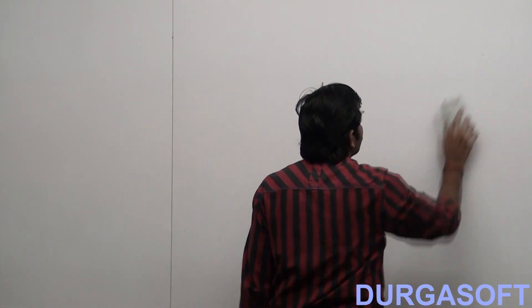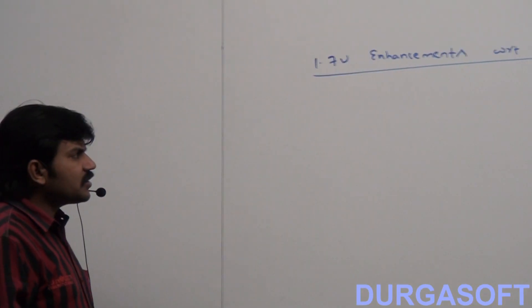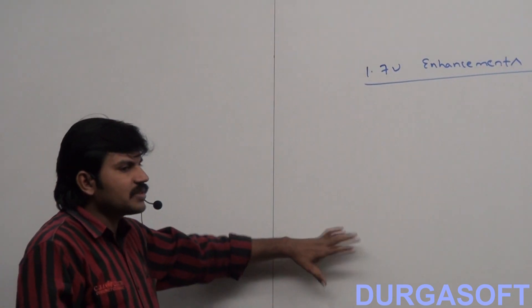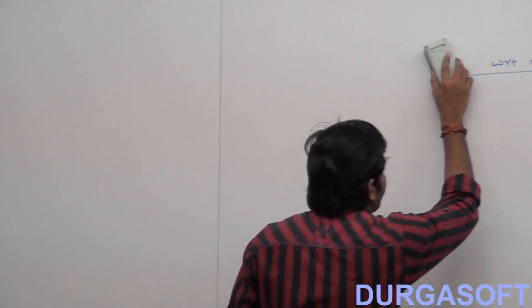Now we will talk about the next level about the main method. In the 1.7 version there are a few enhancements related to the main. Let me talk about that case by case.